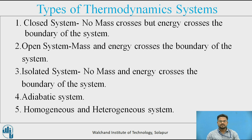Coming to the open system: if matter flows into or out of the system, the system is considered to be an open system. In this system, heat, work and matter may cross the boundary of the system, and the net amount of mass within the system may vary with time. Examples of open systems are: air compressor, centrifugal pump, turbine, carburetor, evaporator, etc.